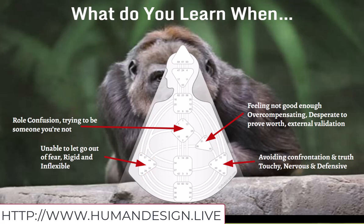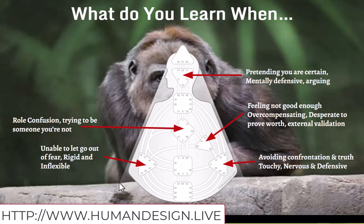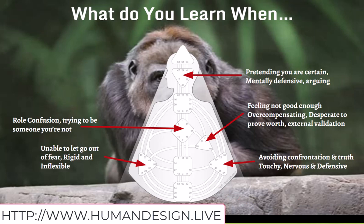When you are pretending that you are certain — pretending out of mental anxiety — when you get defensive, argue, prove your point, prove you're smart, prove you're right, this is where you get lost. For an undefined Ajna person with a conceptualization function, when you let go of trying to appear smart, you can ask questions, learn things, discover new curiosities, opinions, answers, insights, ideas — all these wonderful things moving through you that you don't have to identify with or make decisions about. That's the key.